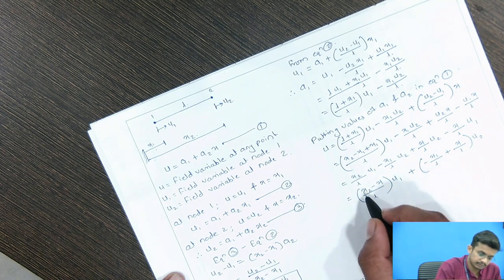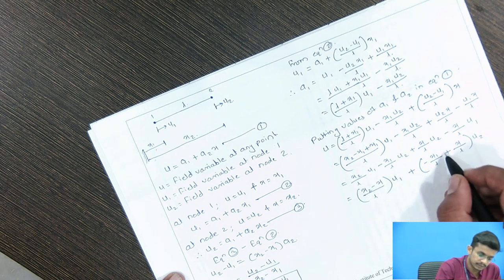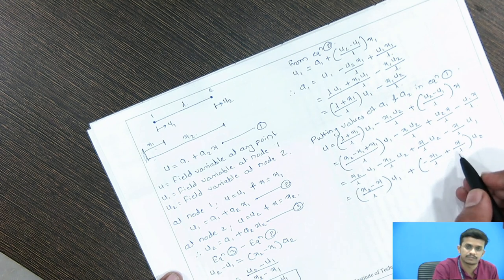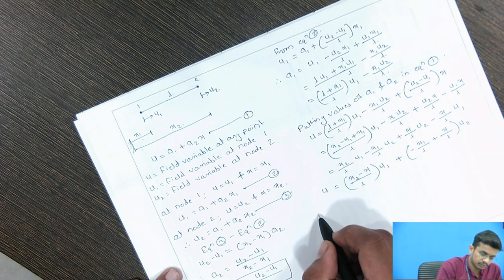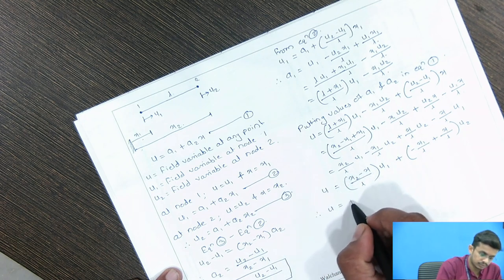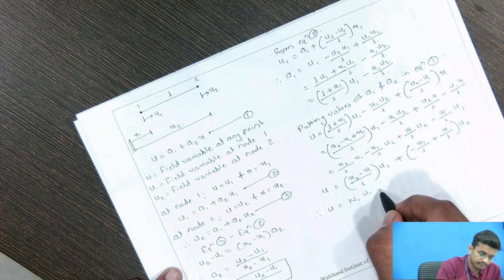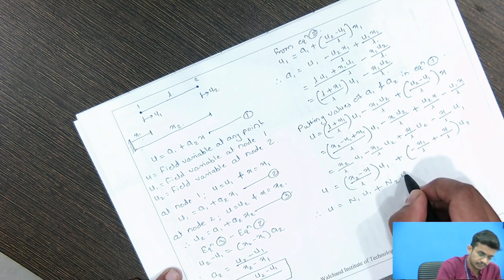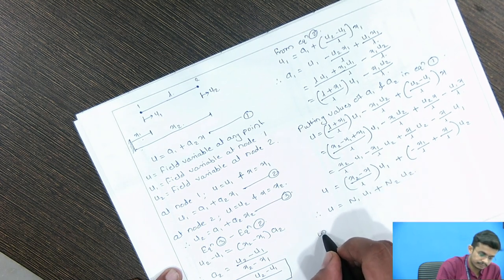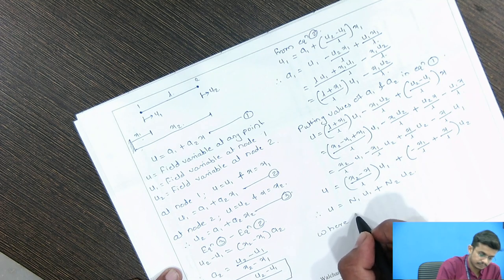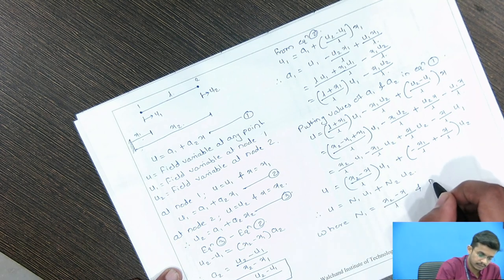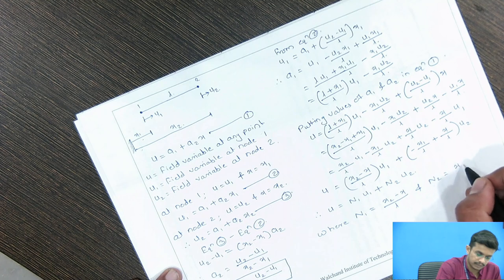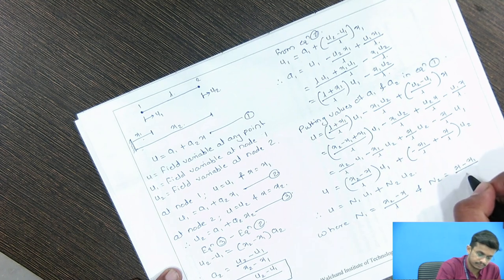These terms are known as the shape functions, denoted by N1, N2, etc. Therefore, U equals N1 times U1 plus N2 times U2, where N1 equals (X2 minus X) divided by L and N2 equals (X minus X1) divided by L.